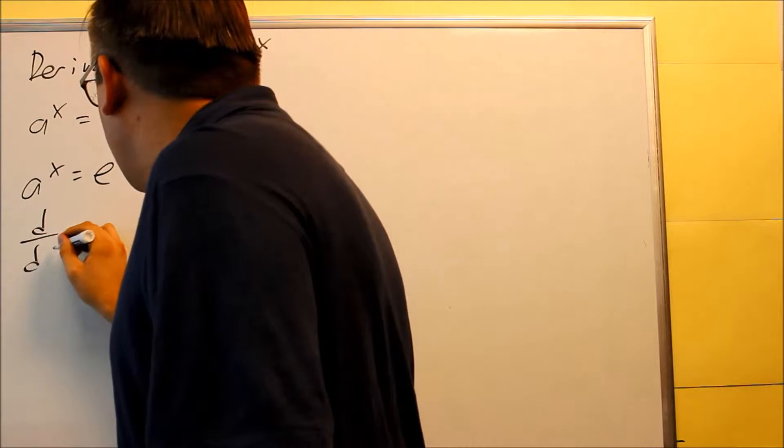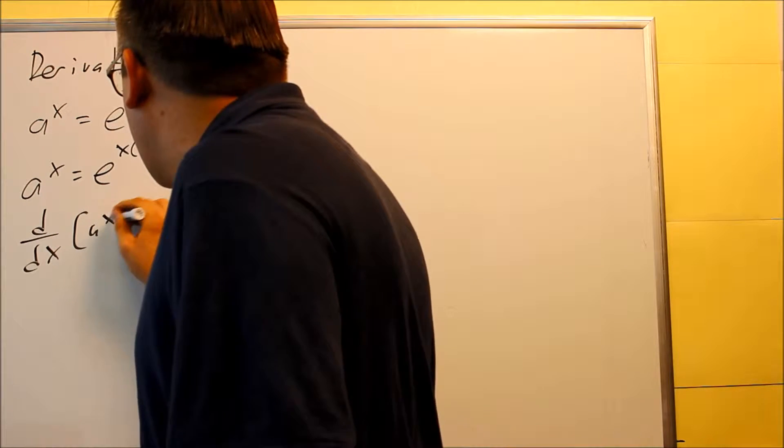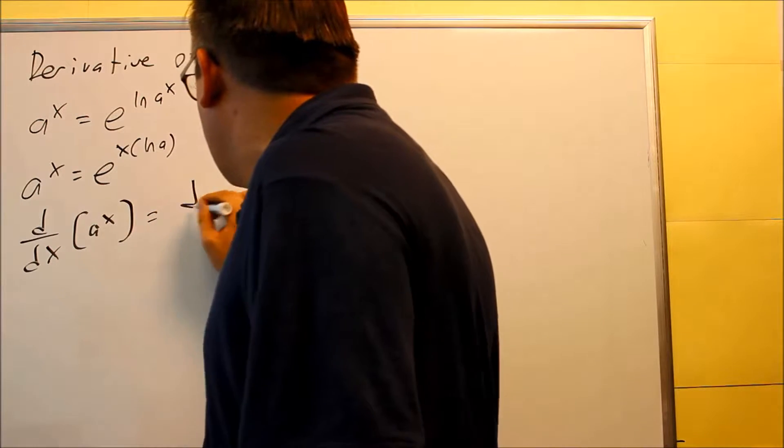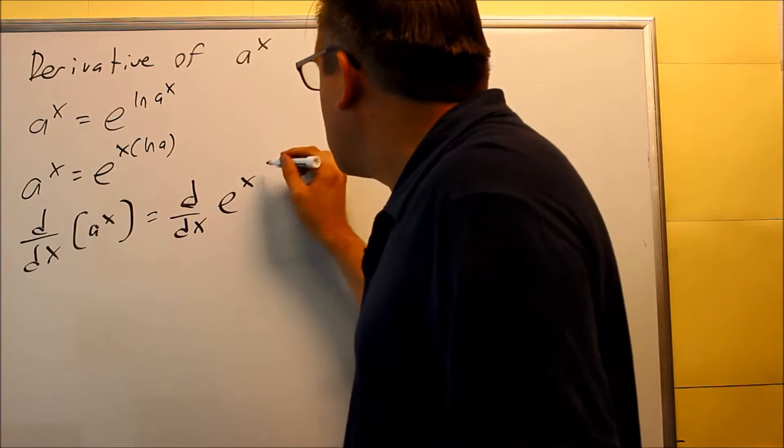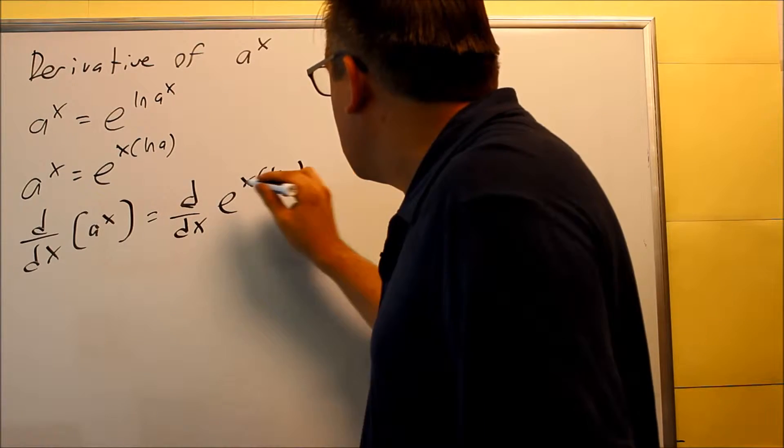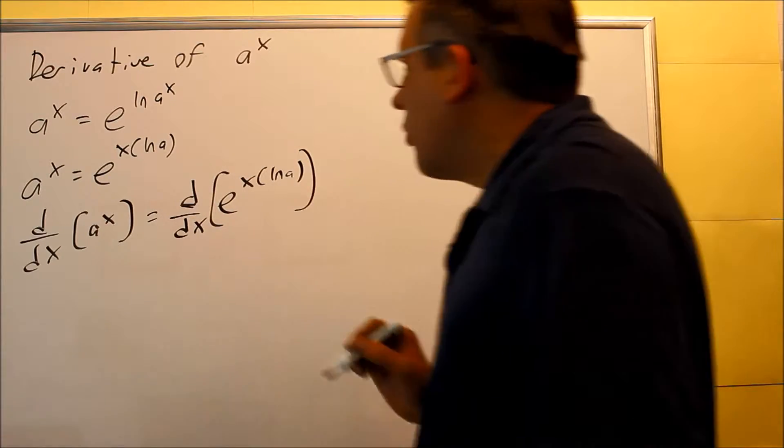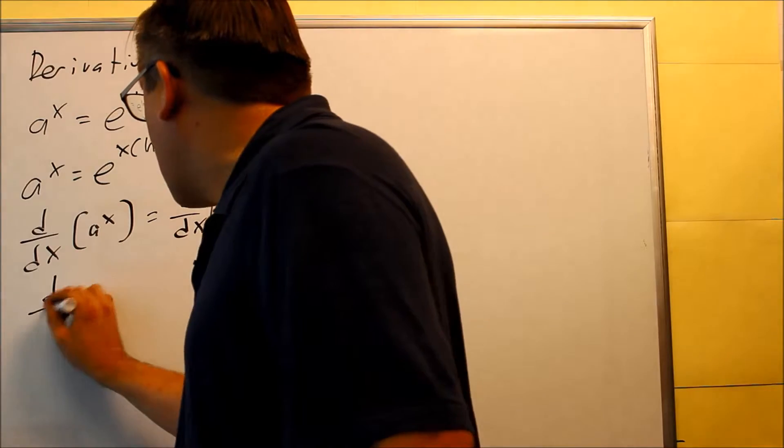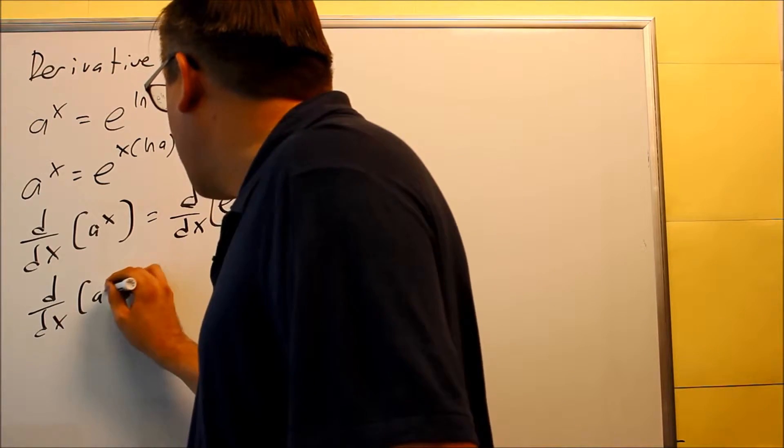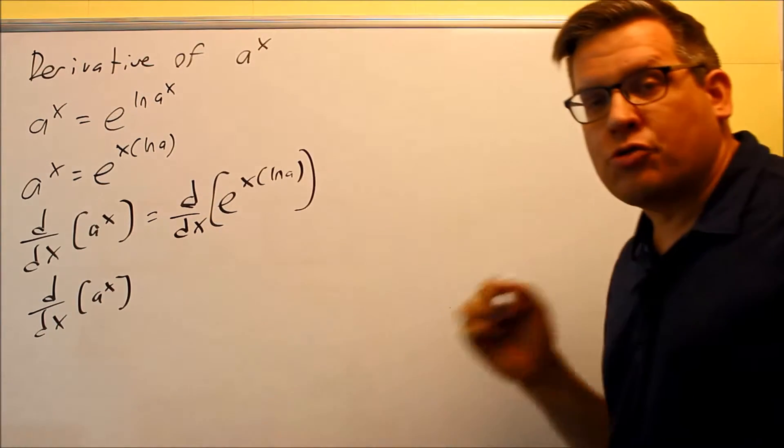So I want to do the derivative of a to the x, so I'm basically going to take the derivative of both sides, e to the x ln a. Okay, so that's what I want to do, take the derivative of both sides. This I'm just going to go ahead and leave it because eventually we're going to be solving for that, so we want to find the derivative of a to the x.